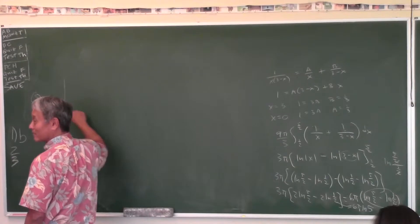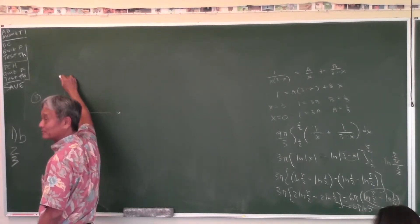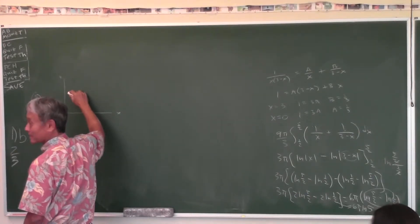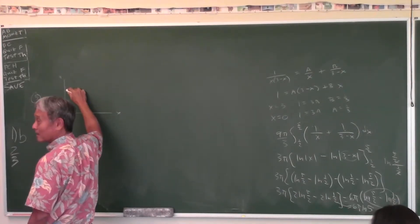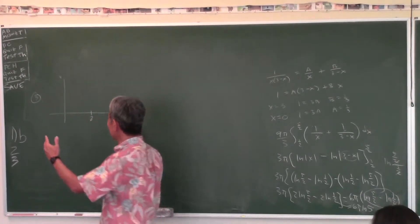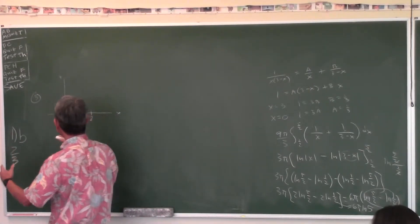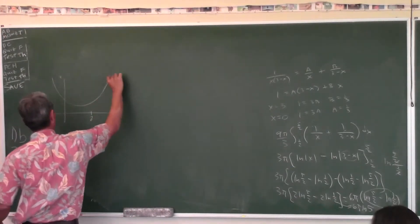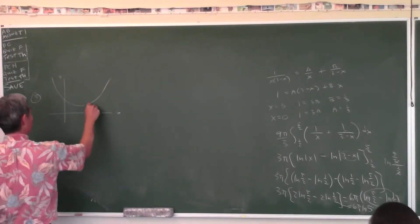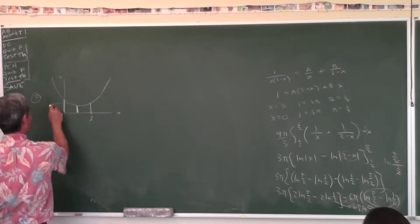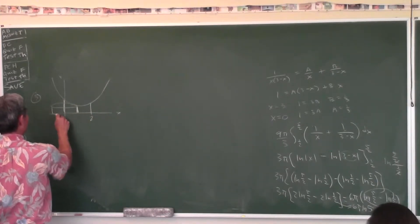What does this graph look like from 0 to 2? The vertical asymptotes are at x equals negative 1 and x equals 3, and the y-intercept is 1. So the graph looks like this. Take this region from 0 to 2, revolve it about the y-axis — what a surprise — it's a shell.